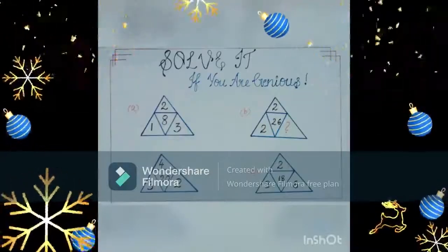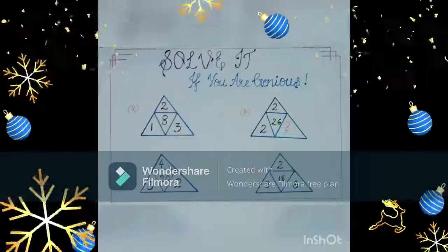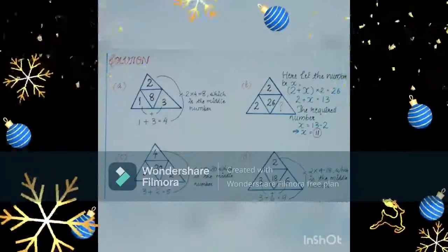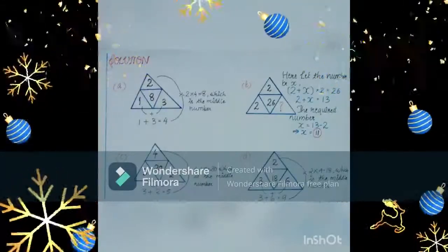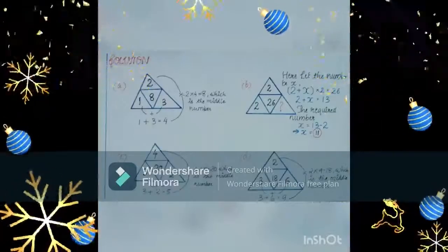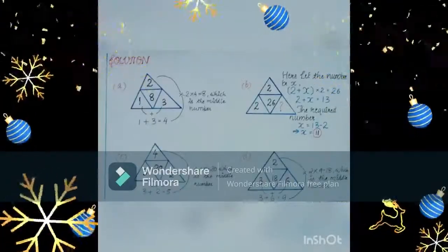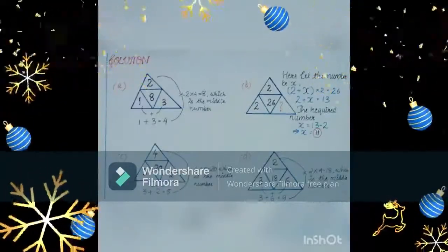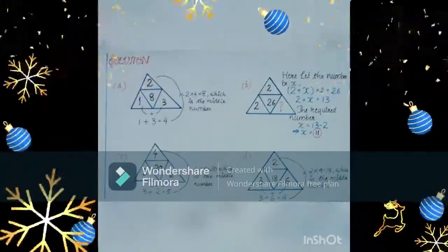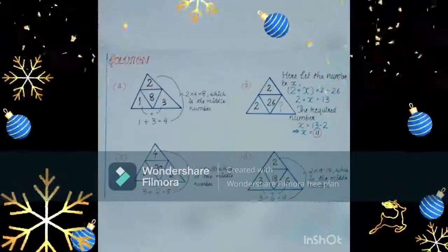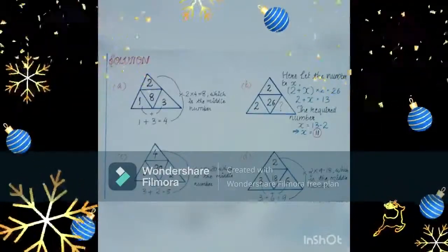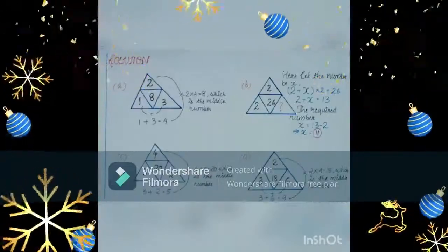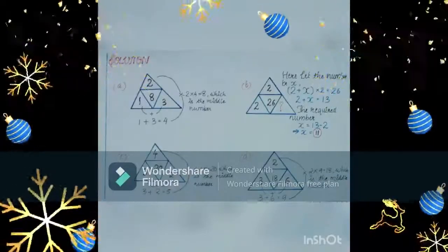Solve the puzzle if you are a genius. Solution: In A we have 1 plus 3 equals 4 and 2 times 4 equals 8 which we have as the middle number. Coming to C, 3 plus 2 equals 5 and 4 times 5 equals 20 which is the middle number. And then D, 3 plus 6 equals 9 and 9 multiplied with 2 gives 18 which is the middle number. Coming to B we can assume the number to be x and by solving the required equation we get the number as 11. Therefore x equals 11.